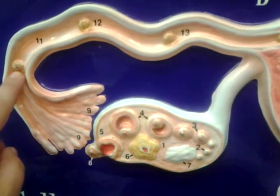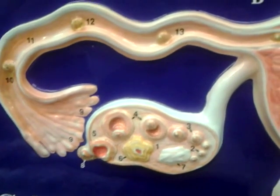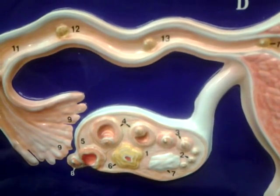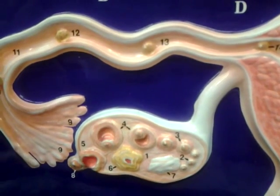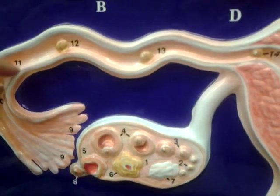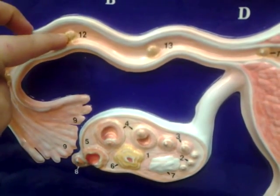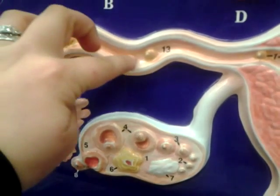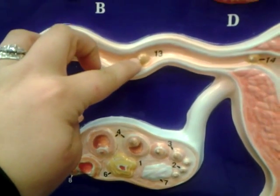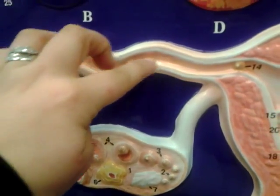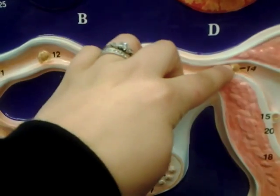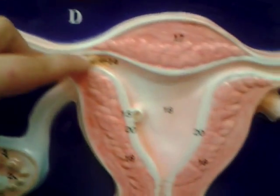In the stages of development, fertilization occurs here. Cleavage begins about here, and then morula is here, and blastula begins here.